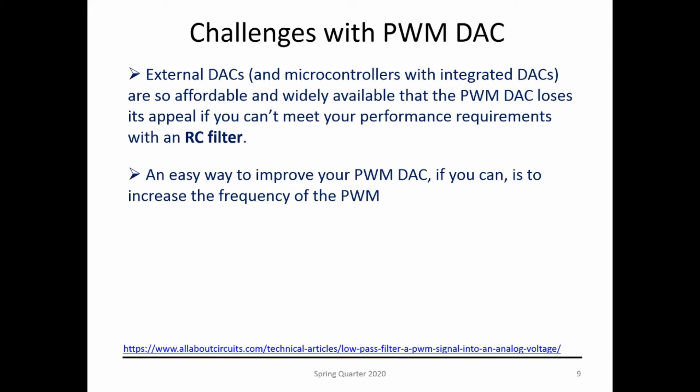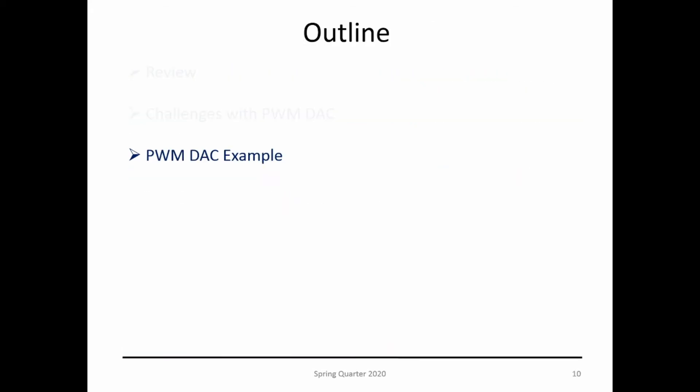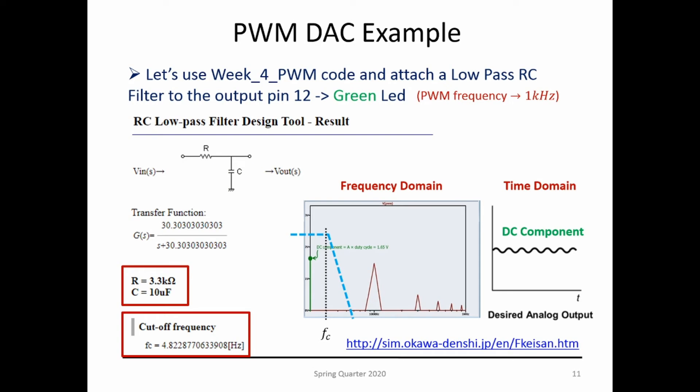Let's go over an example. You guys can use Week 4 PWM code for this and attach a low-pass RC filter to the output pin, to the green LED. In order to design this low-pass filter, you can do the math by yourself or you can just use an online tool that does a good job. You put your capacitor, you put your cutoff frequency, sorry, you put the frequency of your PWM, you put capacitor, and then it will just parameterize the rest of the circuit and tells you what resistance you need.